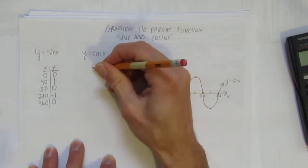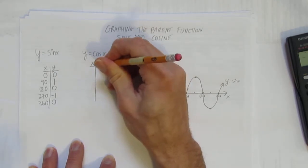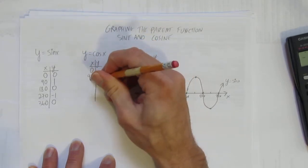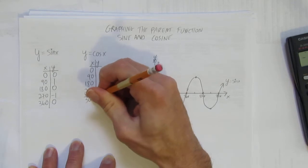Okay, let's make a table for cosine. Same thing, x and y. And for these parent functions, in degrees, the values we pick for x are 0, 90, 180, 270, and 360.